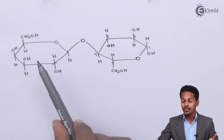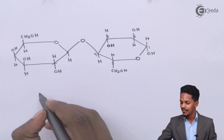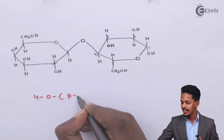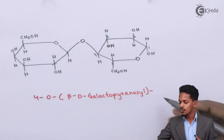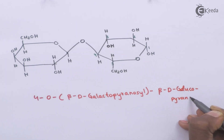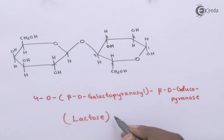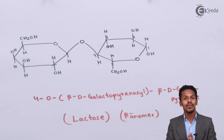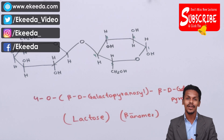To the fourth carbon atom of beta-D-glucopyranose, the beta-galactopyranosyl group is attached via the oxygen atom. Therefore, the name can be written as 4-O-beta-D-galactopyranosyl-beta-D-glucopyranose, which is the structure of lactose with a beta anomeric configuration. Thank you friends for watching this video. I hope you have understood the structure of lactose. Don't forget to subscribe to the Ekita channel.